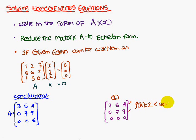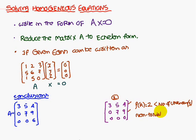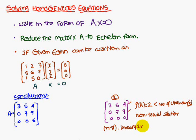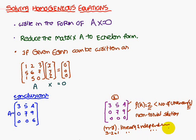If the rank of A is less than the number of unknowns, the system has a non-trivial solution. Also, there exist N minus R linearly independent solutions, where N is the number of unknowns and R is the rank. Here, N equals 3 and R equals 2, so 3 minus 2 equals 1 linearly independent solution exists.